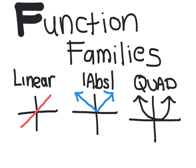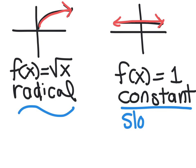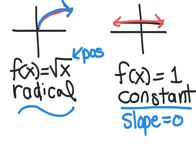The function families we will deal with the most in the first unit are linear, absolute value, and quadratic. You'll also see the radical family and a constant, which is a horizontal line. One important fact about a constant is that its slope is going to be zero. An important fact about the radical function is it only has positive values because the square root is defined as the positive answer — for example, the square root of 25 is only positive 5, not also negative 5.